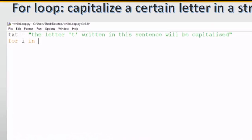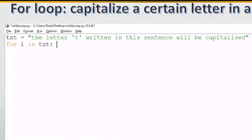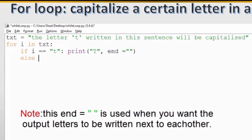For example we have a text and we want to capitalize the letter T in that text. We write down for i in txt, which is the variable that contains the text. If i is equal to lowercase t, print uppercase T. Else print i.